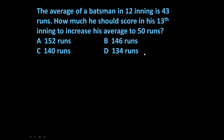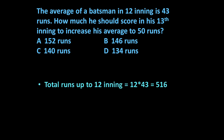Four options are given and we have to identify the correct option. To answer this type of question, first let us find out the total runs up to 12 innings. Since the average up to 12 innings is 43, the total runs up to 12 innings will be 12 × 43 = 516.